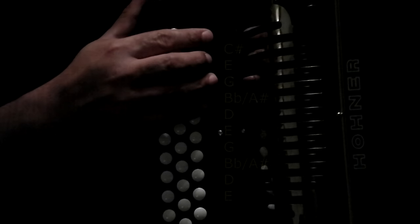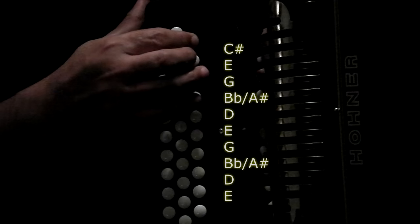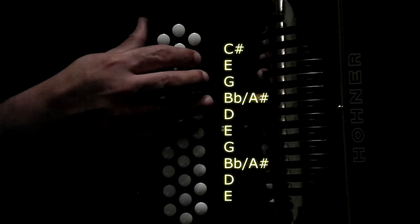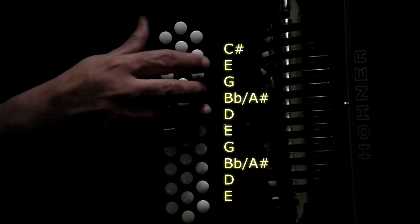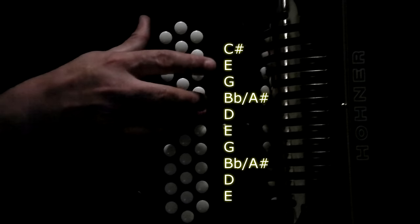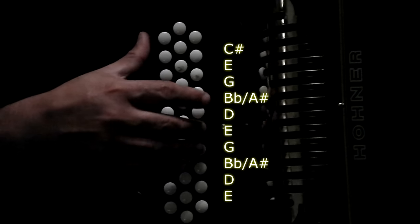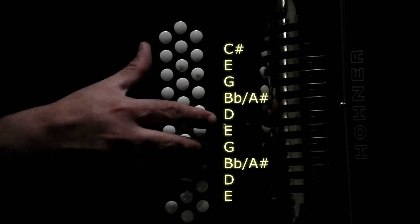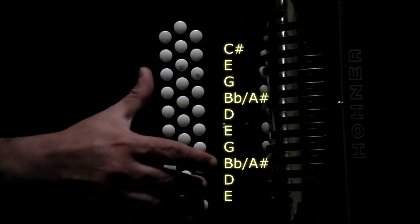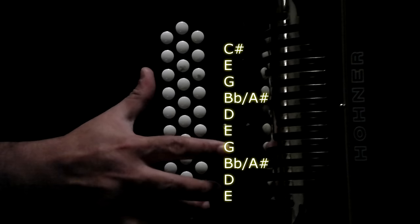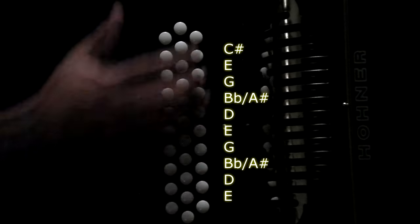Alright. Last row. Going to start off with C sharp. So one more time. C sharp, E, G, B flat or A sharp, D, and E.